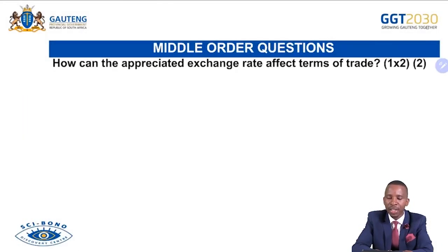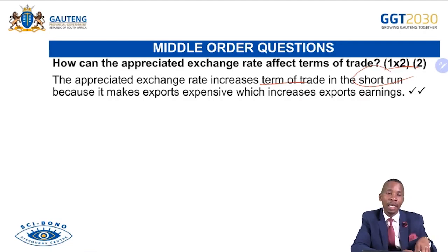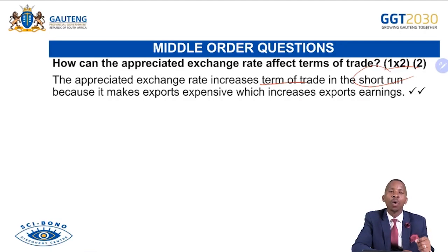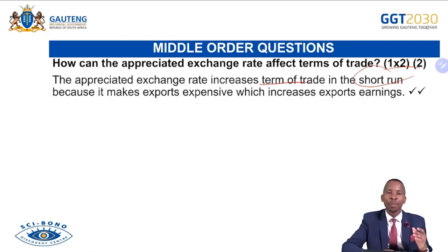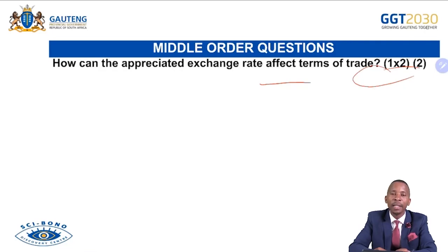'How can an appreciated exchange rate affect terms of trade?' An appreciated rate increases terms of trade in the short run because it makes exports expensive, which increases export earnings. But in the long run, consumers will seek alternative or substitute products, decreasing foreign demand for our local exported goods and services. So in the long run, terms of trade will decline because foreign demand declines as consumers seek substitutes for our exported goods and services.